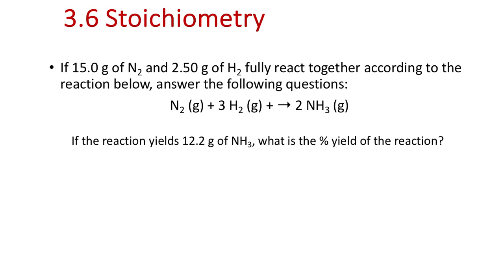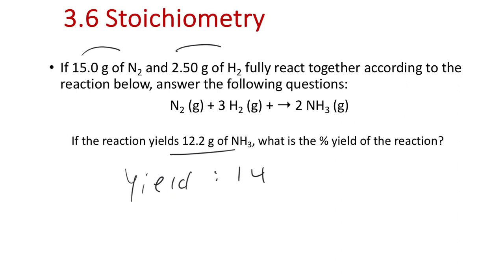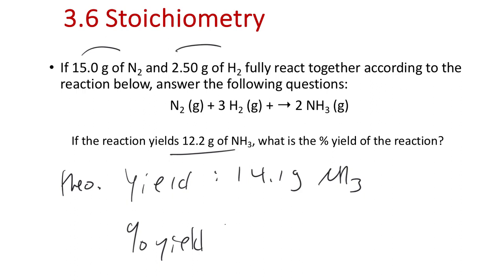For the percent yield: from the previous problem, the theoretical yield was 14.1 grams. If the actual yield was 12.2 grams, then percent yield = (12.2 / 14.1) × 100% = 86.5%.